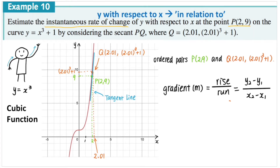We know that in order to find the gradient we need two points. To find instantaneous rate of change, we take a point very close to point P. Point Q is very close because its x value is only 0.01 more — so 2 and 2.01 are very close. To find the corresponding y value for Q, we substitute 2.01 into the equation and find the corresponding y value. To be as accurate as possible, we keep this expression as it is rather than converting to a decimal.